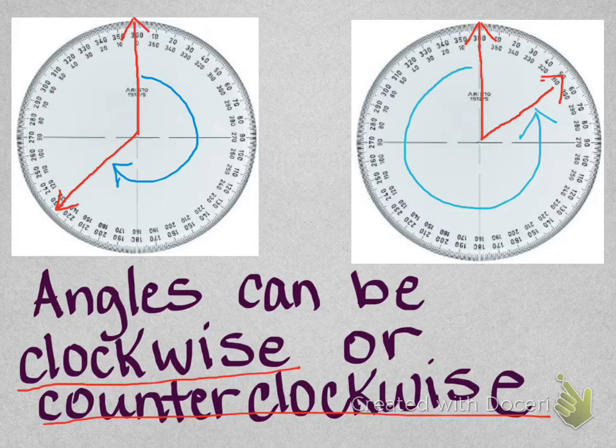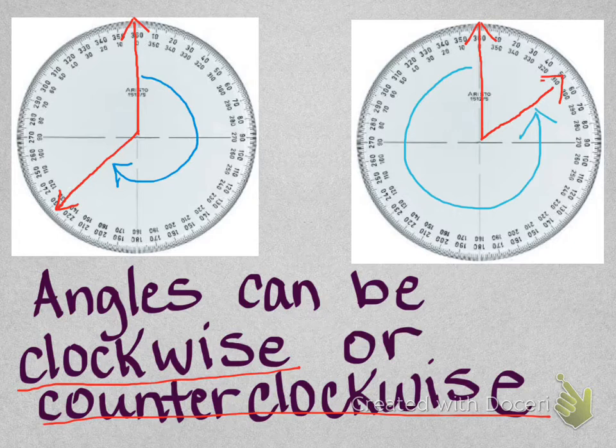So here are our first full circle protractors. I've drawn an angle on each one in red, and in blue I've drawn an arrow to show which way we are going to measure that angle. So one of the angles is going clockwise, which would be the one on the left, and the other one is traveling counterclockwise, which is the one on the right. So let's look back at the one on the left. Notice I have the blue arrow going around like a clock, clockwise.